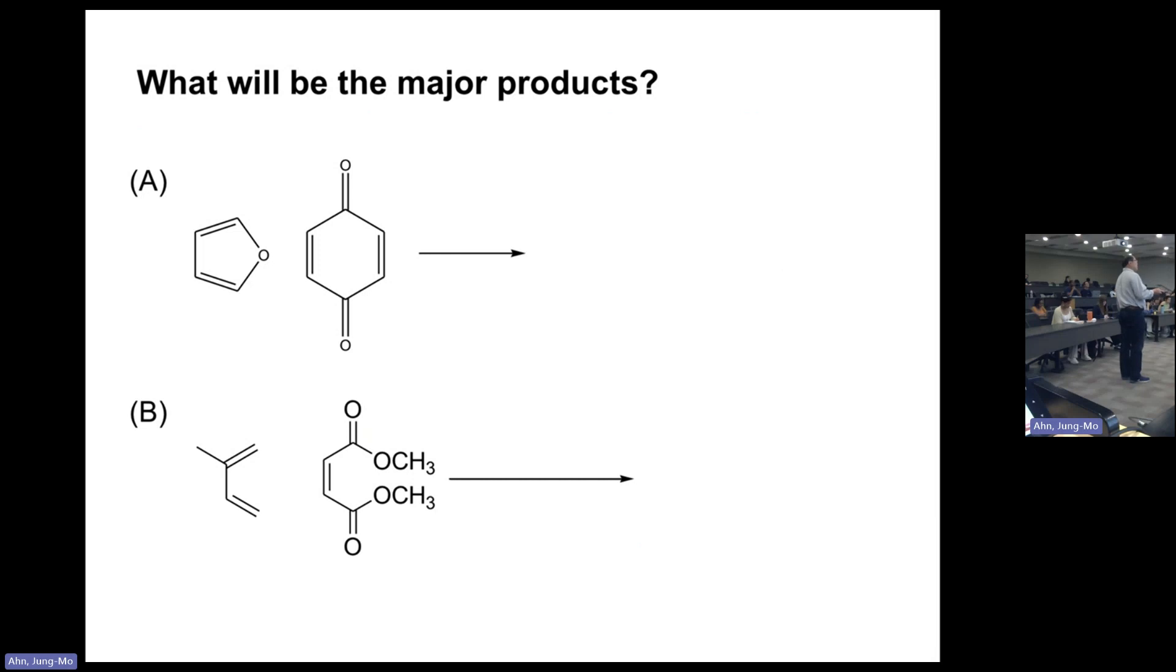This is the diene side with two double bonds, typically with electron-donating groups. Alkyl groups are electron-donating groups, as are alkoxides.